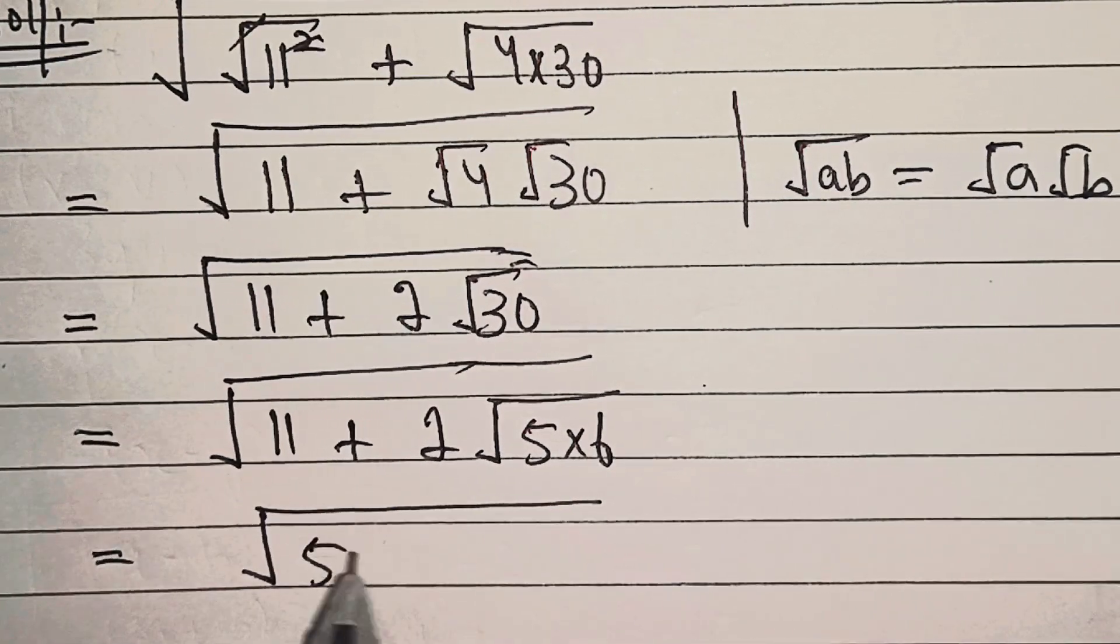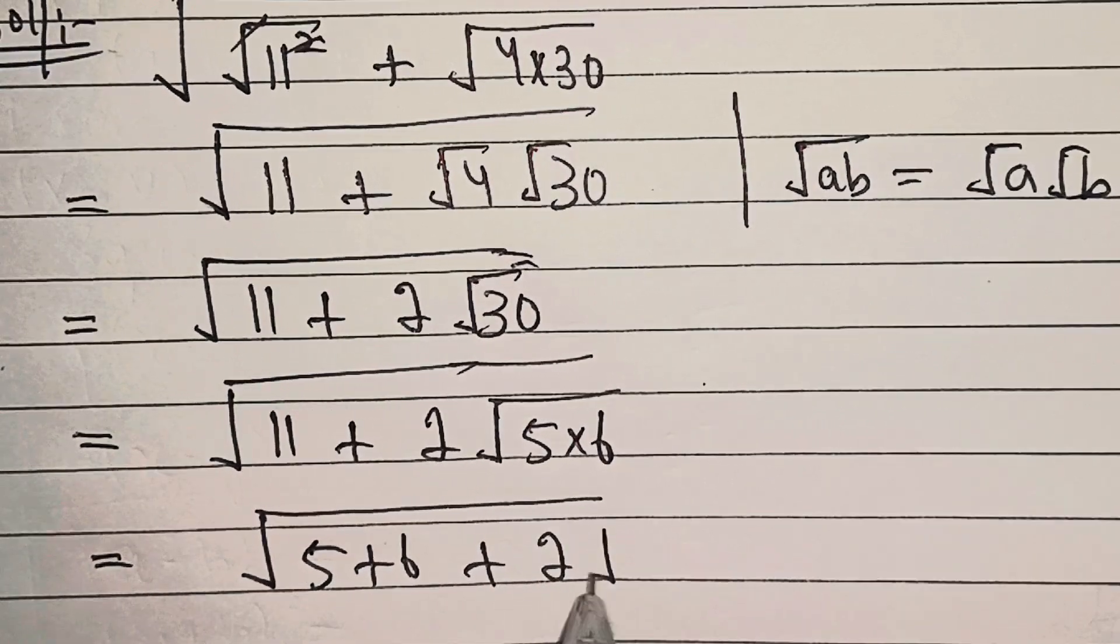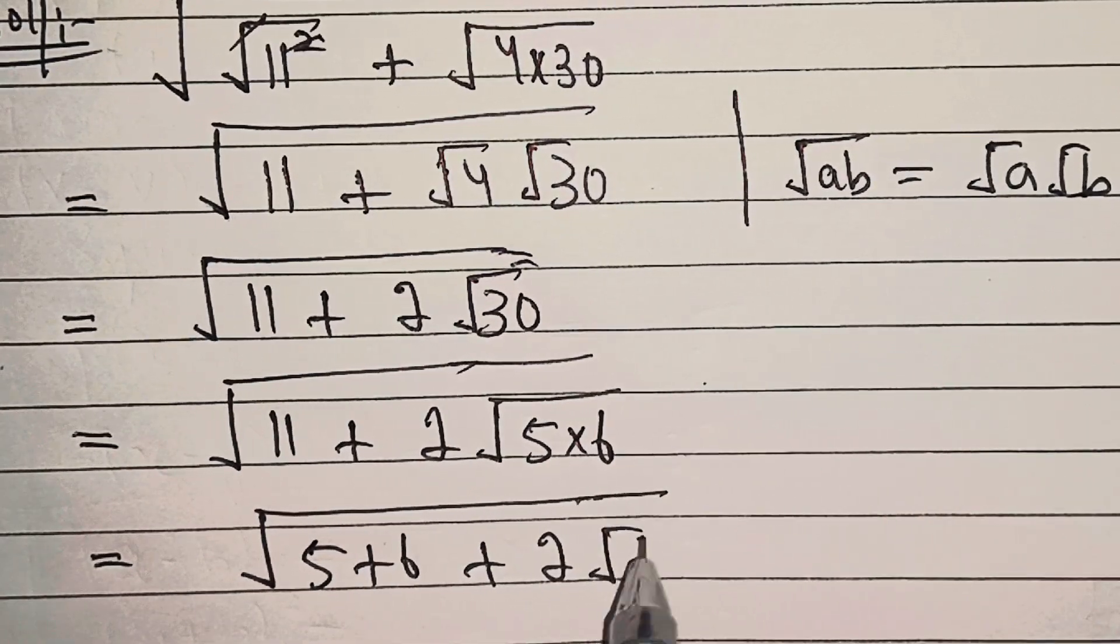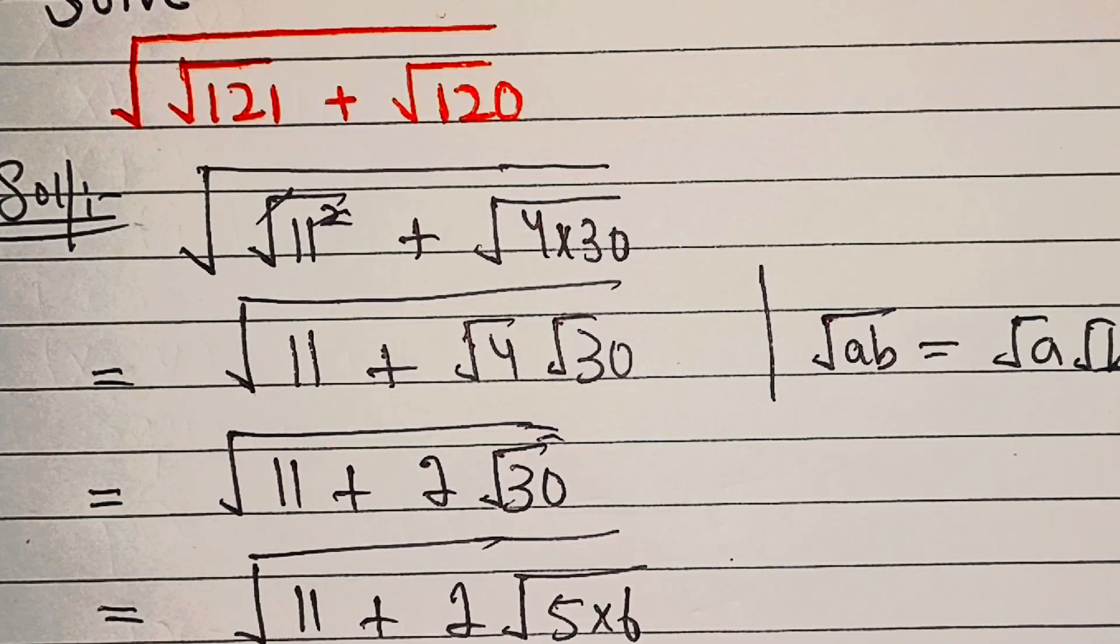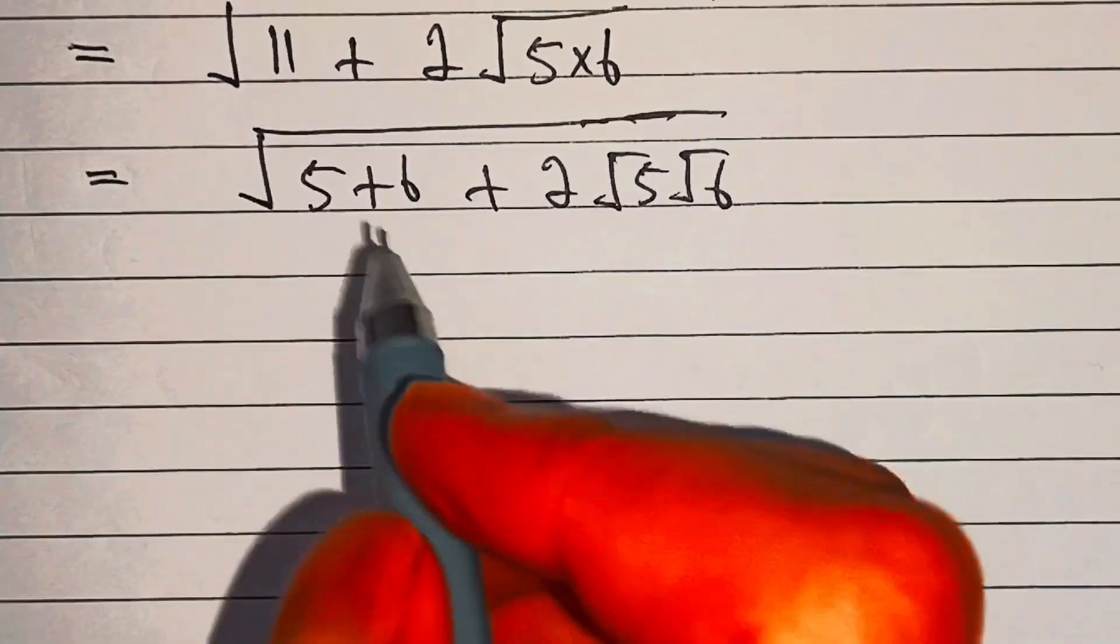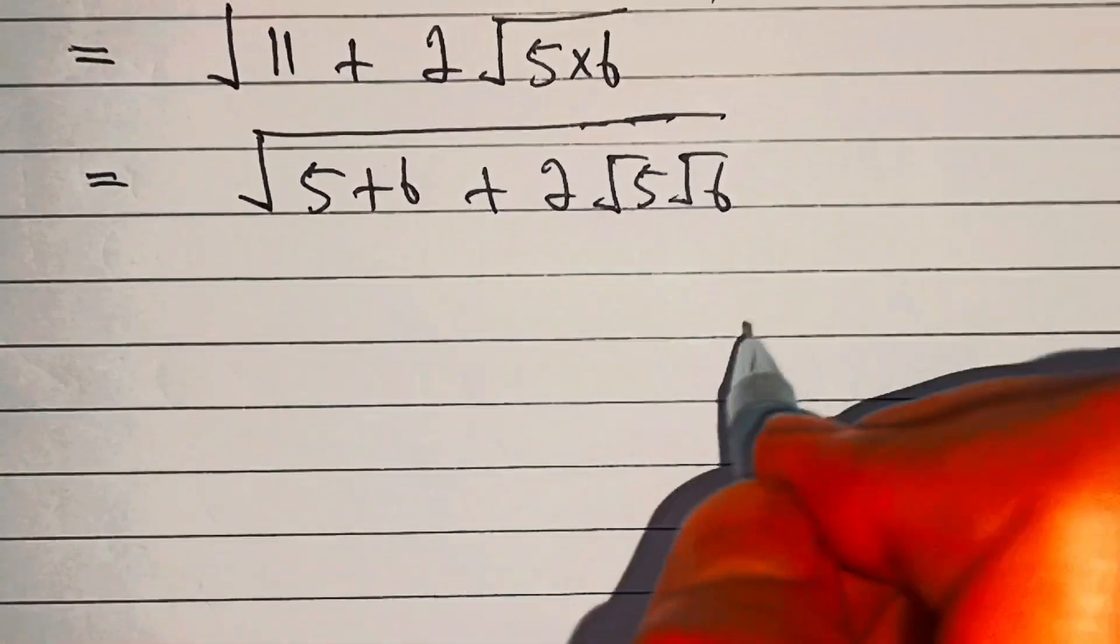5 plus 6 plus 2 into under root 5, under root 6. The reason is the same. Now this 5 is same as under root 5 squared, and 6 is same as under root 6 squared.